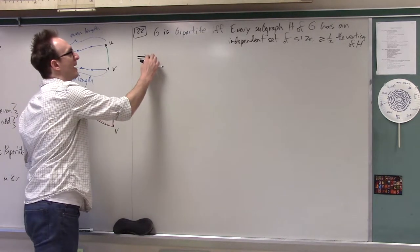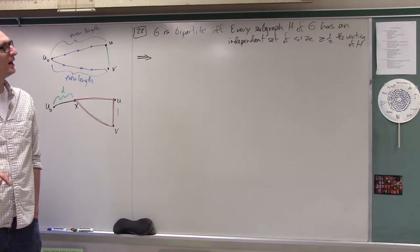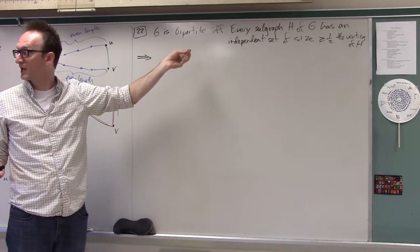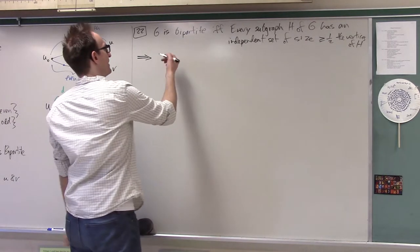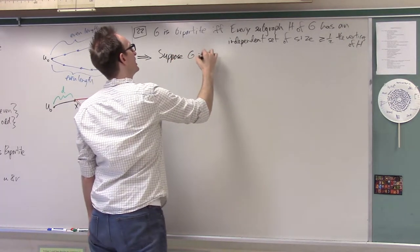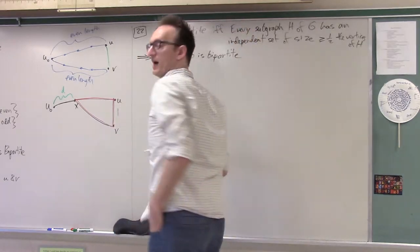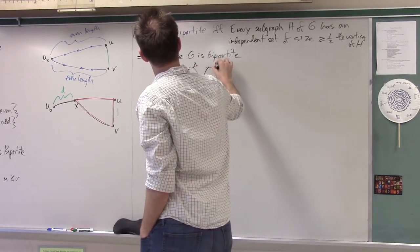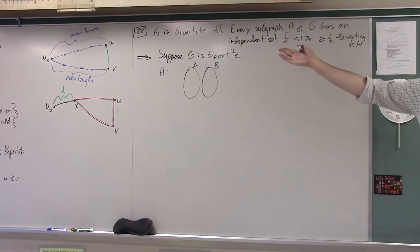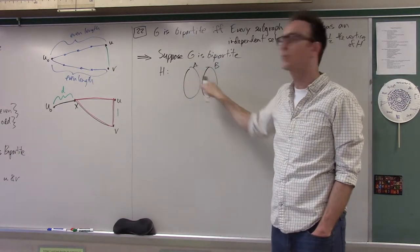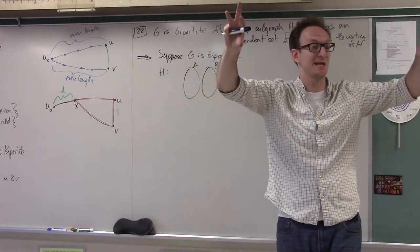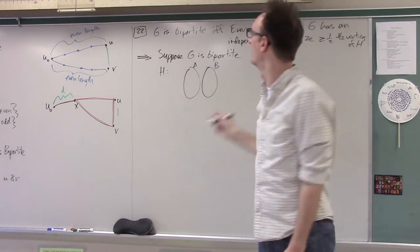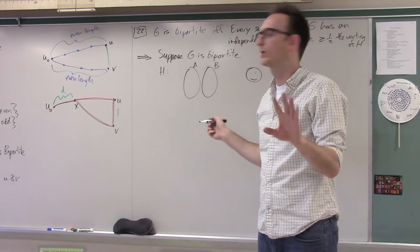Again, one of the directions is easy. If it's bipartite, then every subgraph is also bipartite. So suppose G is bipartite and take any subgraph H. Well, then H is also bipartite, so H can be partitioned into two sets A and B. Each half of any bipartite partition is an independent set, because none of those vertices are adjacent to each other. At worst case, the two sets would be of equal size, but then we still satisfy the theorem — one of the sets has size at least half the vertices of H.